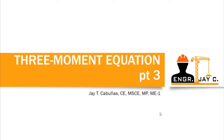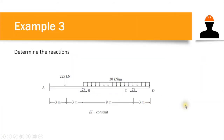We will try to solve more problems in this third part. We have Example Number 3, in which we are asked to determine the reactions. This is a continuous beam with three supports and a total of five reactions. Since this is an indeterminate beam, we cannot use equilibrium equations to analyze it, so we will need another approach: three moment equations.